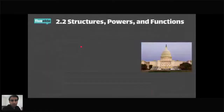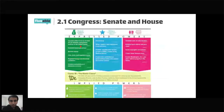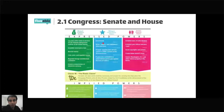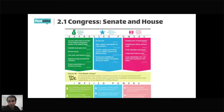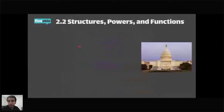In terms of expressed and implied powers, anything related to money almost always comes from Congress — borrowing money, coining money, regulating foreign commerce, regulating interstate commerce. Congress can also declare war; a common misconception is that the president declares war, but Congress is the one that does. The slides will be shared on the Fiveable website after the presentation.